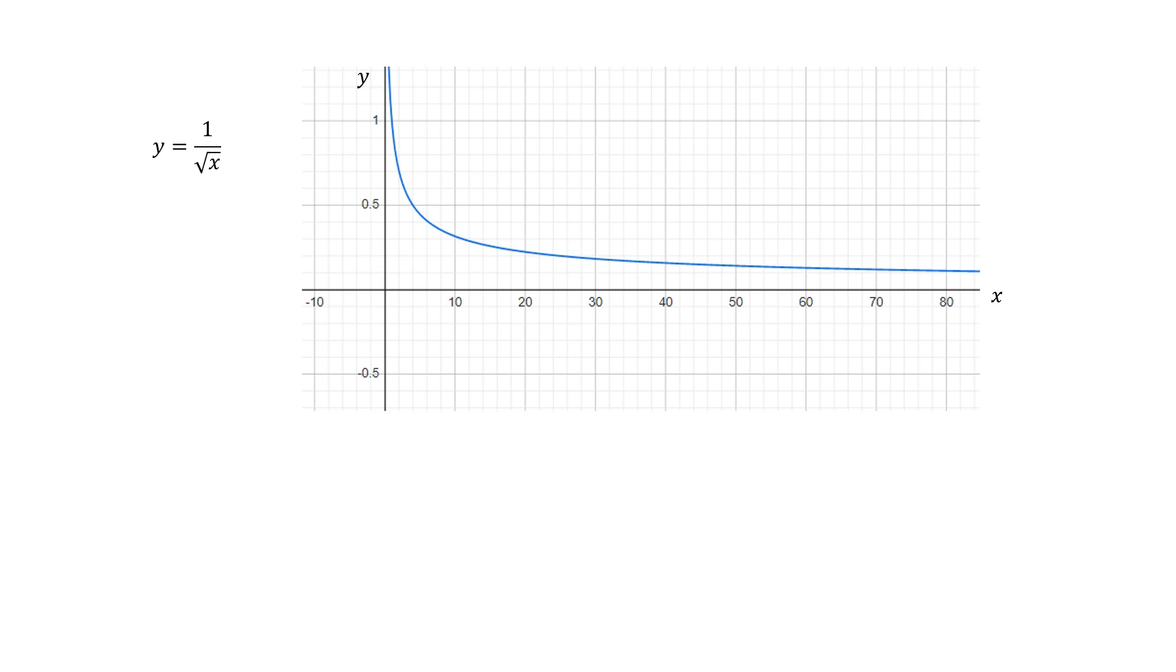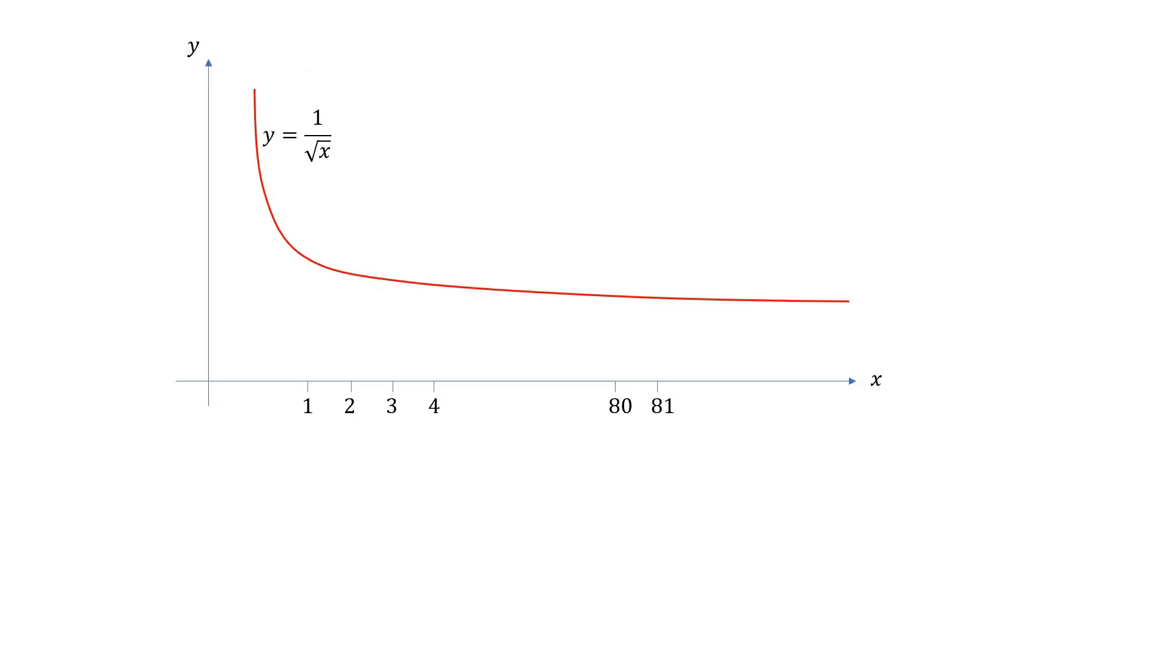It's a function that goes down as x increases. You don't really need to know the exact shape of this function. You just need to know that as x increases, y goes down. Let's consider this function between 1 and 81. The function is the red line.